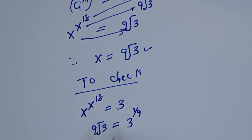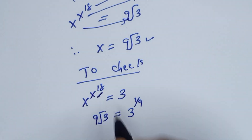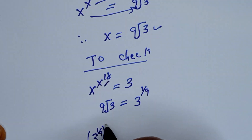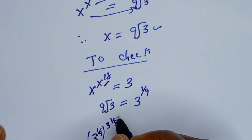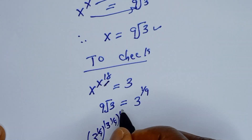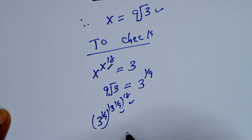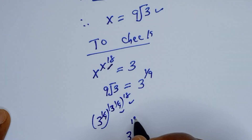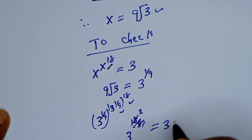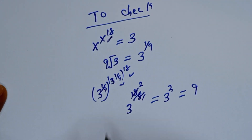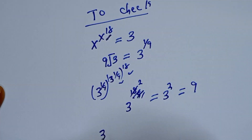Now let's substitute. We work with the inner exponent first: 3 to the power of 1 over 9, to the power of 3 to the power of 1 over 9, to the power of 18. Working with the inner two gives us 3 to the power of 18 over 9, which simplifies since 18 over 9 equals 2, giving 3 to the power of 2, which equals 9.